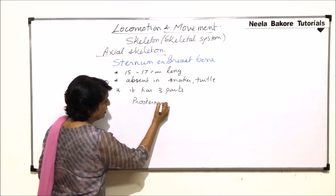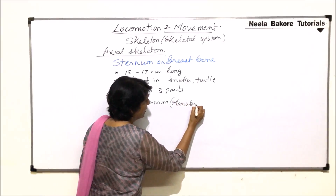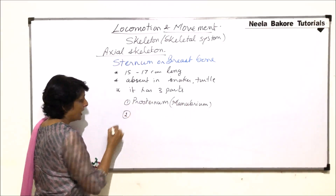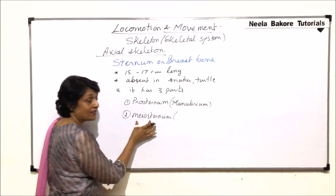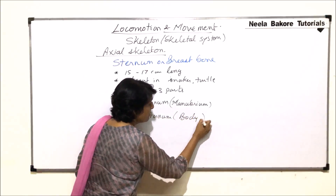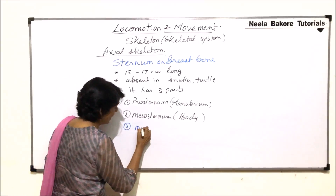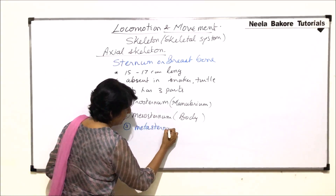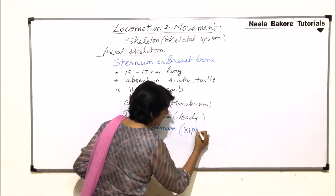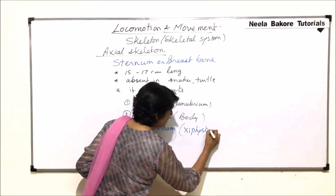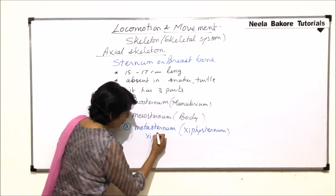In humans, the breast bone is divided into three parts. The first part is called prosternum, also known as the manubrium. The second part is called mesosternum, which is the largest part and commonly referred to as the body of the sternum. The last and smallest part is cartilaginous, known as metasternum, also called the xiphoid sternum because it is made up of xiphoid cartilage.